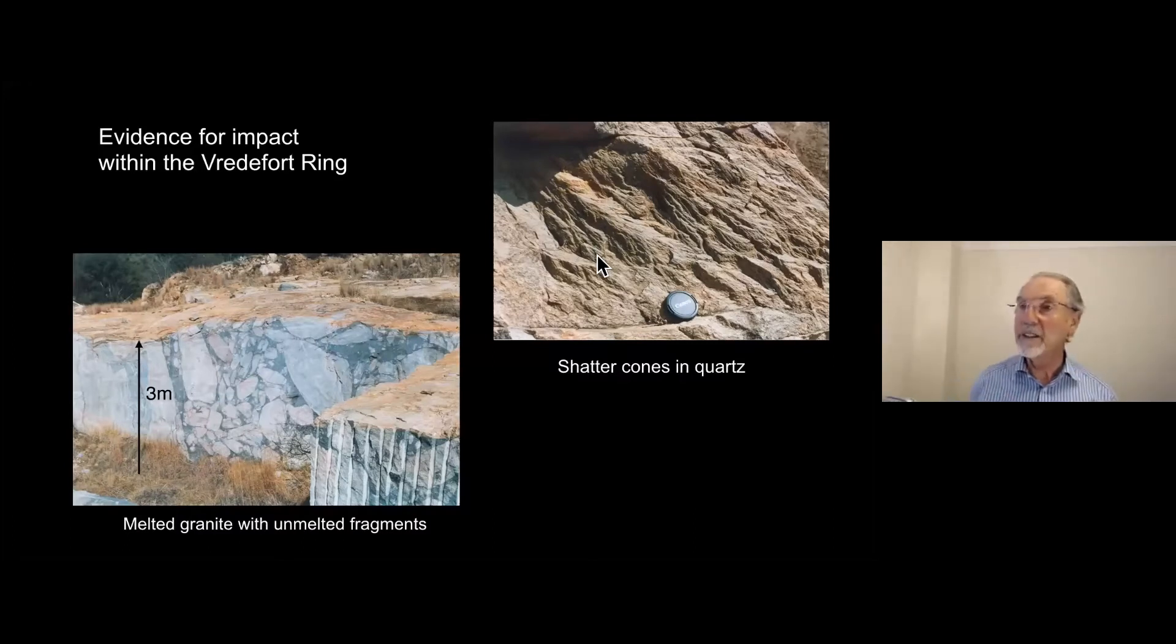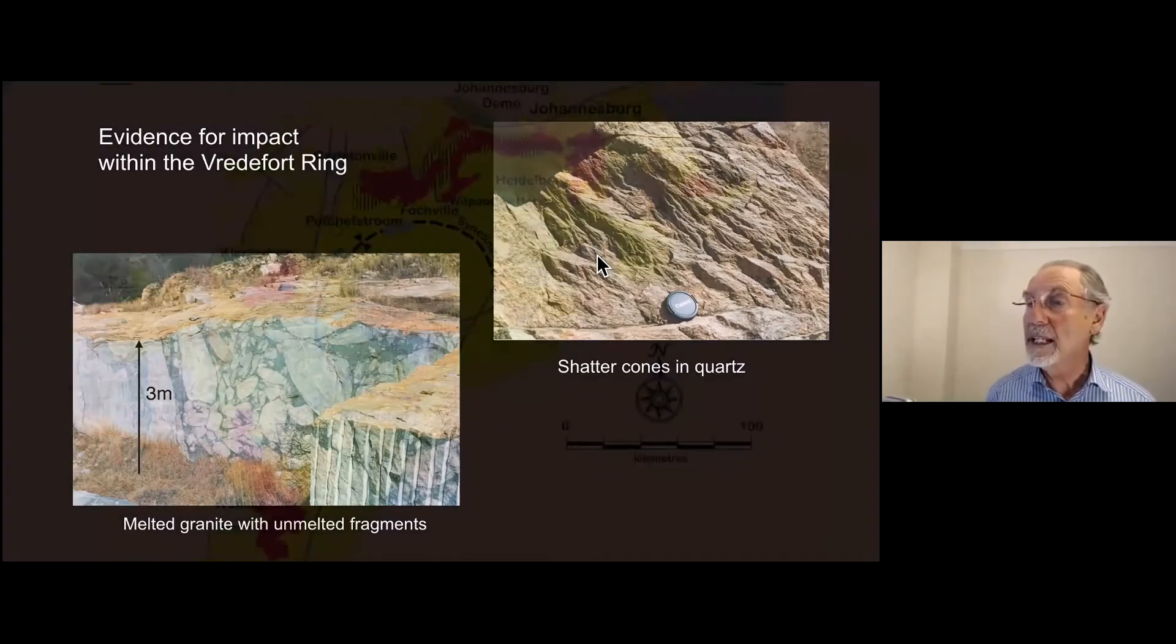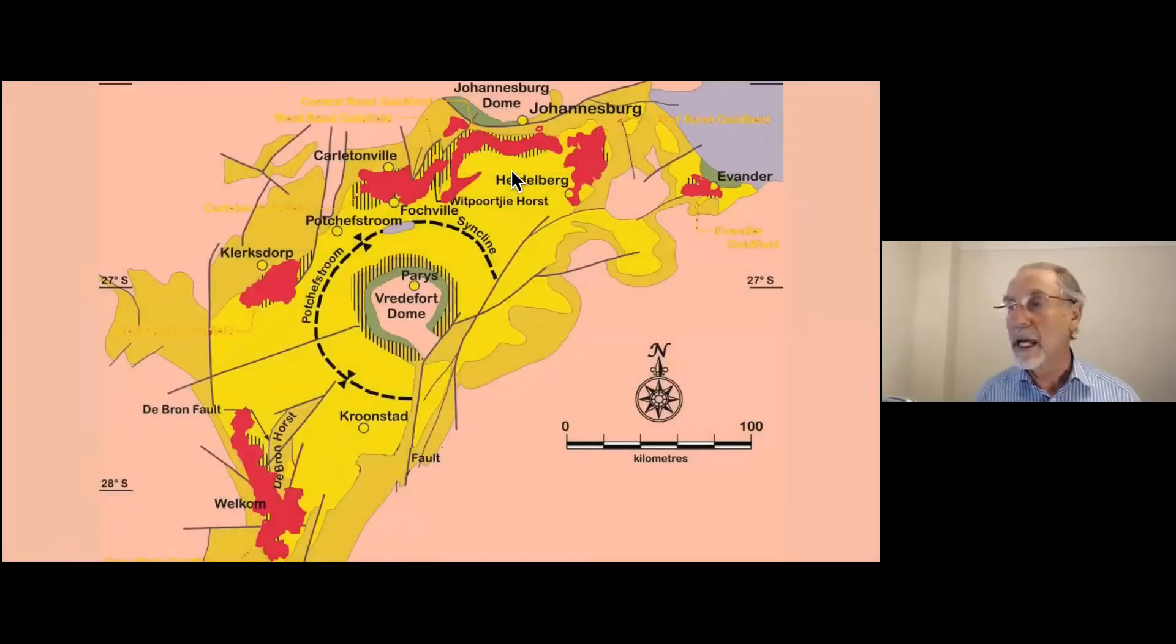Now, the Vredefort crater does have huge economic importance because it uplifted strata concentrically around it, and these red are the gold mining areas, those are the gold-bearing strata. So the impact brought up to the surface, gold that had been laid down before, and from this area alone, something like a third of the gold ever mined, about 40,000 metric tons of gold has been taken from this area.